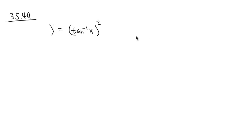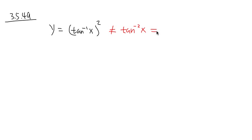3.5, number 49. We are going to differentiate y equals inverse tangent x, in parentheses, squared. This means we have inverse tangent x times inverse tangent x. I would like to show you guys — this notation doesn't mean the same as tangent to the negative 2 of x. It doesn't mean 1 over tangent squared x. They don't mean the same. This is the inverse tangent; the negative 1 is for the inverse function.